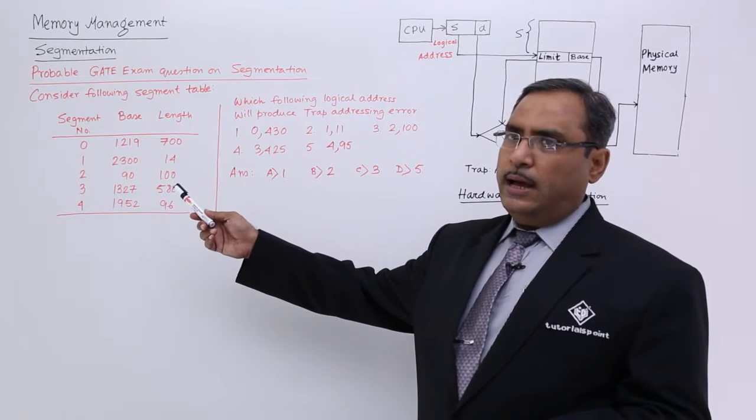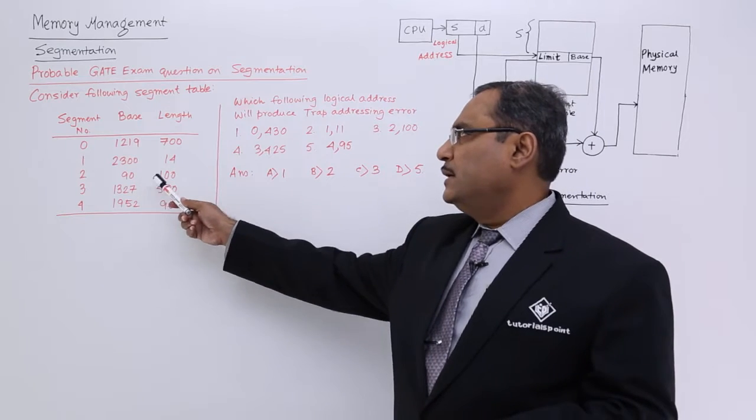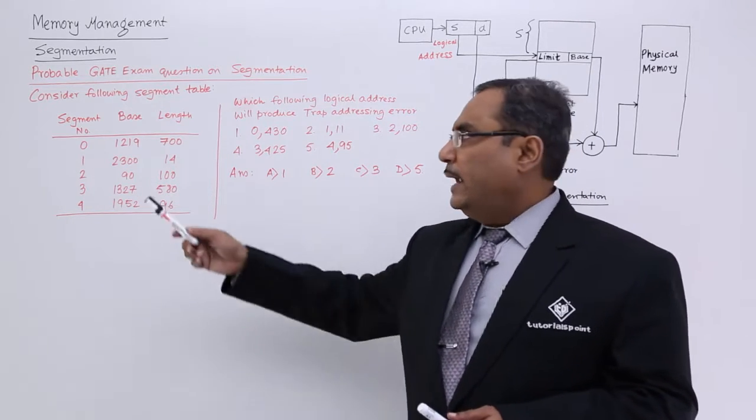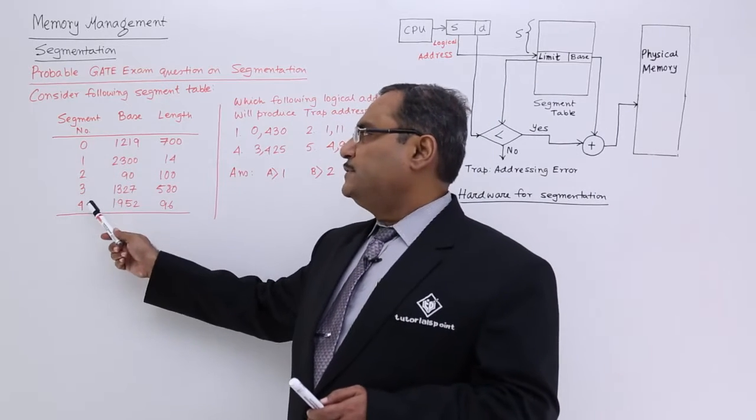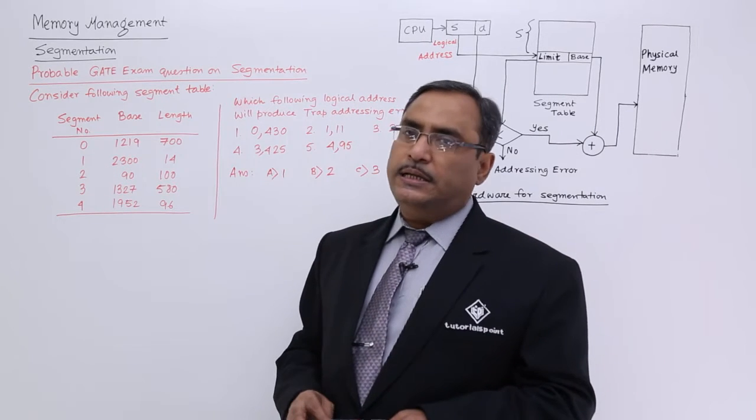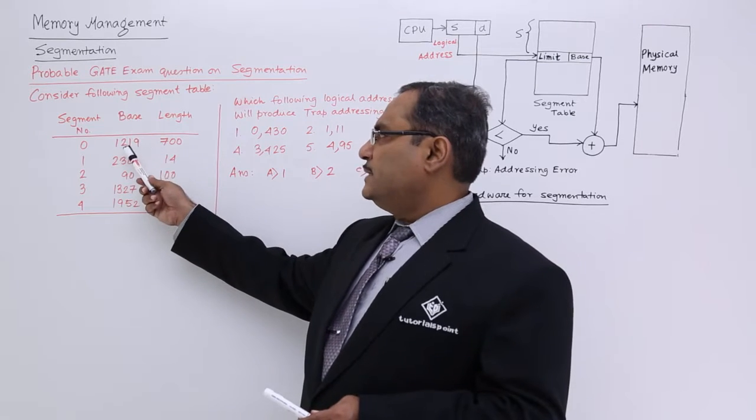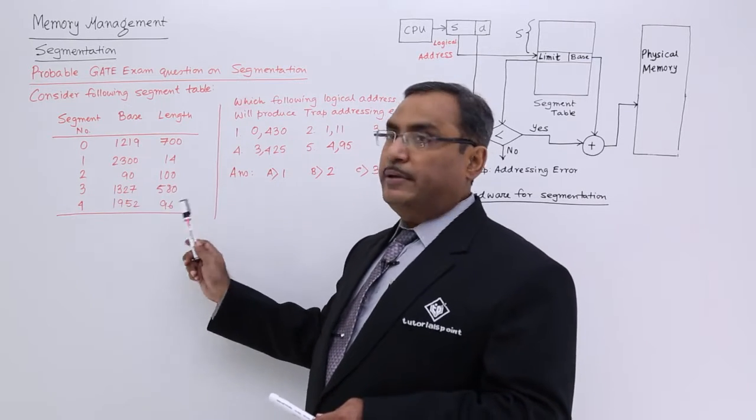We know the segment table will have mainly two columns, one is the base, another one is the length, and segment number will be the location number. So here we are having five segments, so segment number is ranging from 0 to 4 and the base addresses are given and the lengths are given.